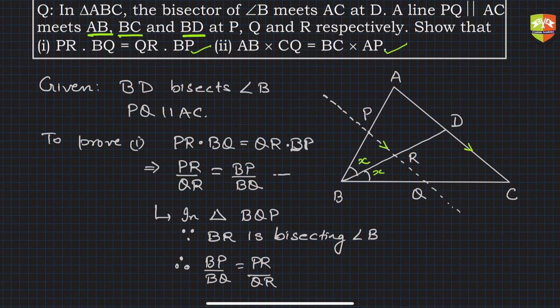This completes the first part. Now for the second part: AB × CQ = BC × AP, which involves sides AB and BC.